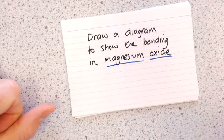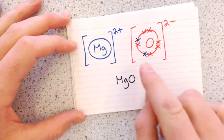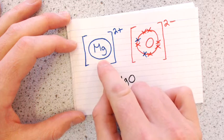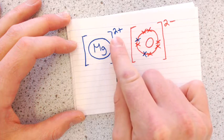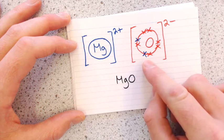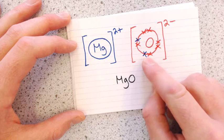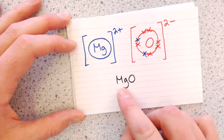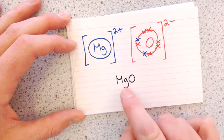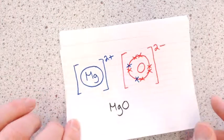Another example: the bonding diagram for magnesium oxide (MgO). The magnesium had two electrons in its outer shell, which have moved to the oxygen, giving it a charge of two plus. The oxygen now has a full outer shell of eight electrons, having gained two from the magnesium, so it has a charge of two minus. It's MgO because the charges need to balance — one magnesium for every one oxygen.